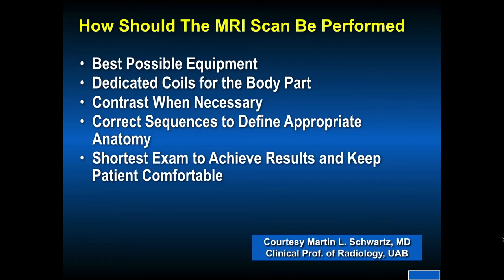How should the MRI scan be performed? With the best equipment possible. Dedicated coils for the body part. Contrast when necessary. Correct sequences to define appropriate anatomy. And the shortest exam to achieve the results and keep the patient comfortable — it's very uncomfortable if it is a lengthy exam. The patient may be large and in a small gantry, and they are moving. So we want a short exam that also provides a good study to give us more information to make the proper diagnosis.